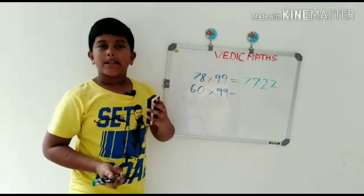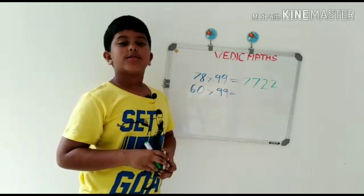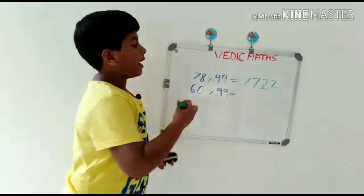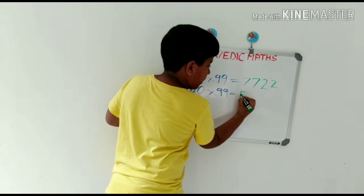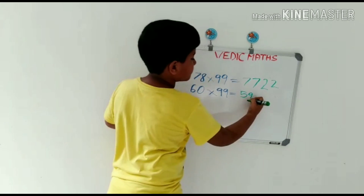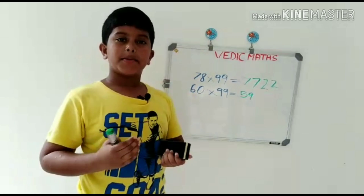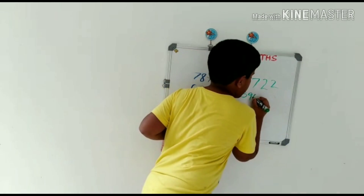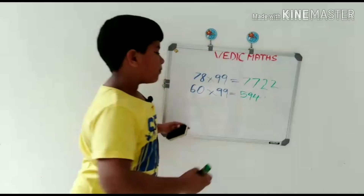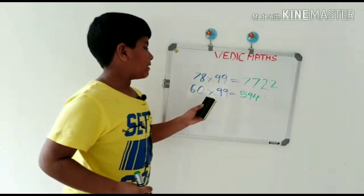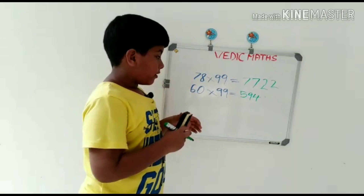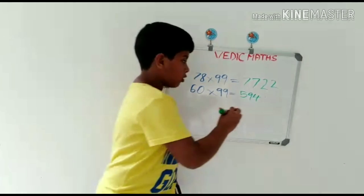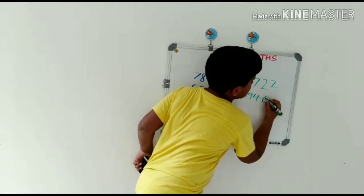60 multiplied by 99. First, we should write the number 1 less than 60, that is 59. And what number should be added to 5 to get the number 9? That's 4. And what number should be added to 9 to get the number 9? That's 0. So the answer is 5940.